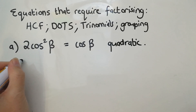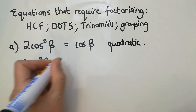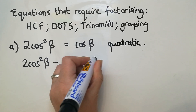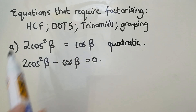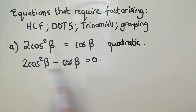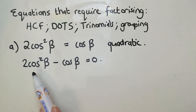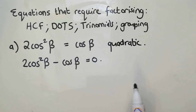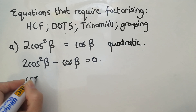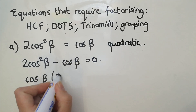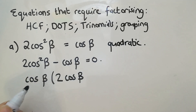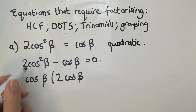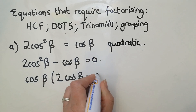Move everything to the left-hand side so you can factorize, just like with quadratics: cos²β minus cosβ equals zero. What factorizing method applies? It's not difference of two squares because there's no perfect square. It's not a trinomial because there are only two terms, and not grouping because that needs four terms. So take out the highest common factor: cos β, leaving you with cos β times (2cosβ minus 1) equals zero.